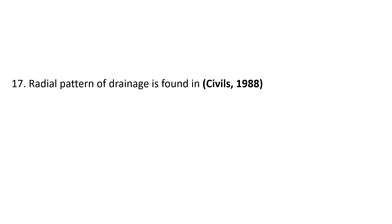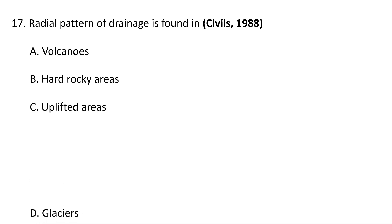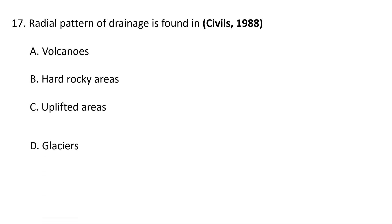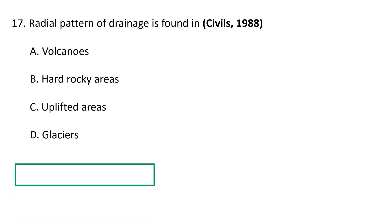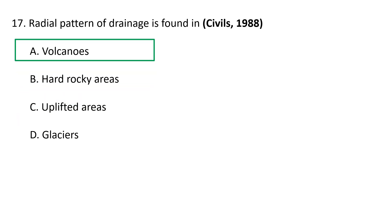Next question: Radial drainage pattern is found in — A) volcanoes, B) hard rock areas, C) uplifted areas, D) glaciers. Generally, radial drainage pattern is found in volcanoes, so A is the correct answer.